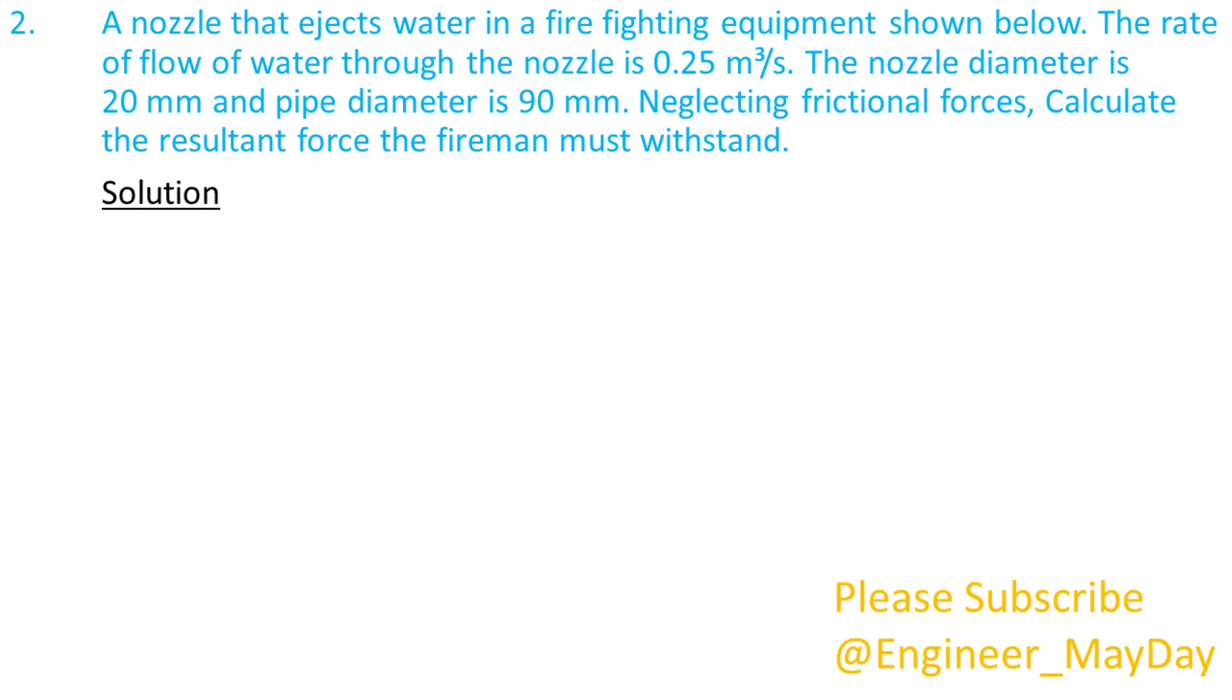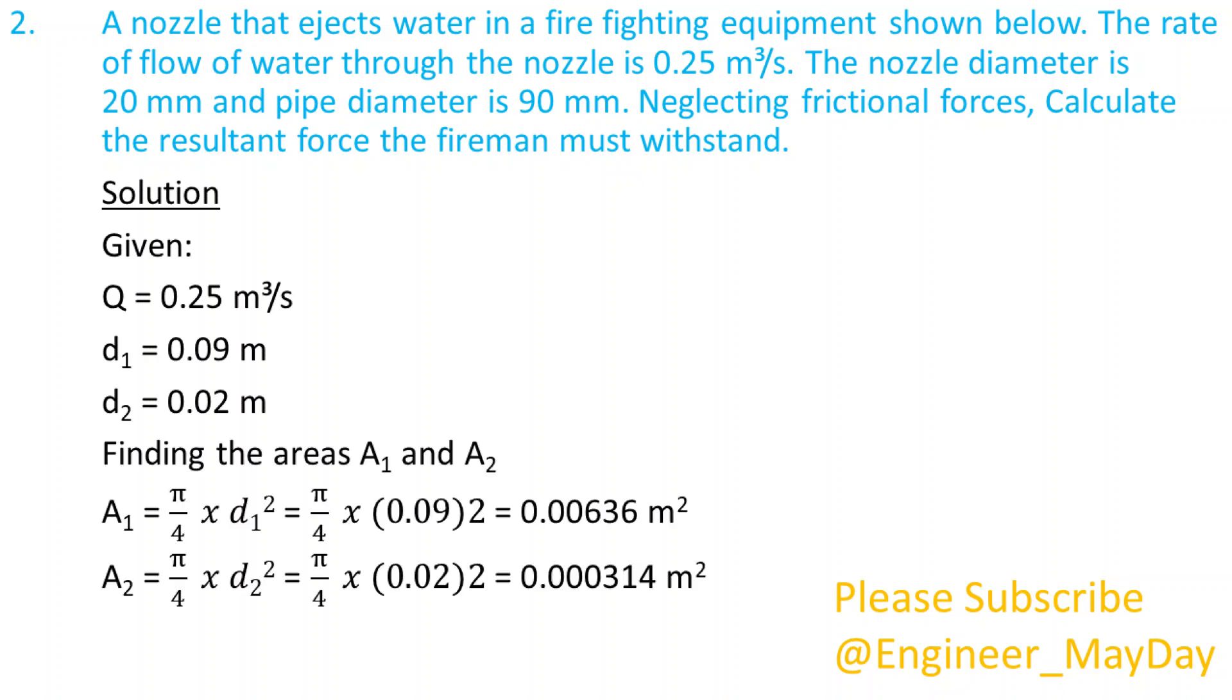Solution. Given: Q equals 0.25 cubic meters per second. D1 equals 0.09 meters. D2 equals 0.02 meters. Finding the areas A1 and A2. A1 equals 0.00636 square meters. A2 equals 0.00314 square meters.